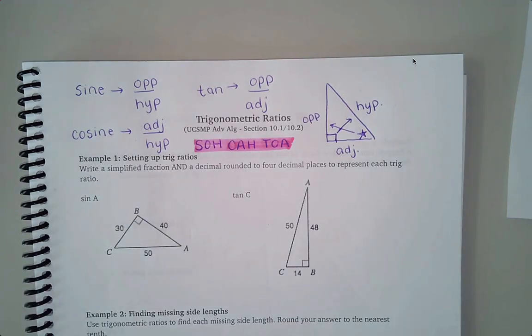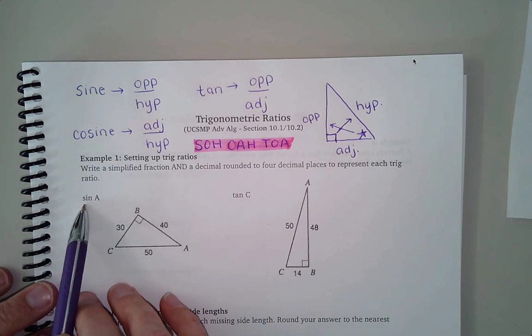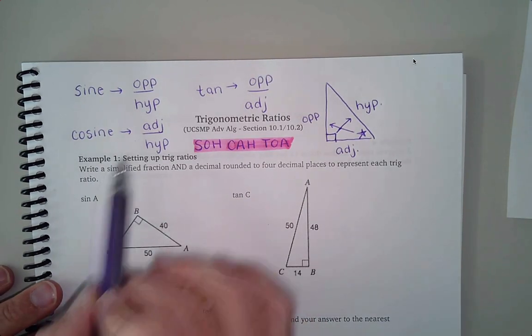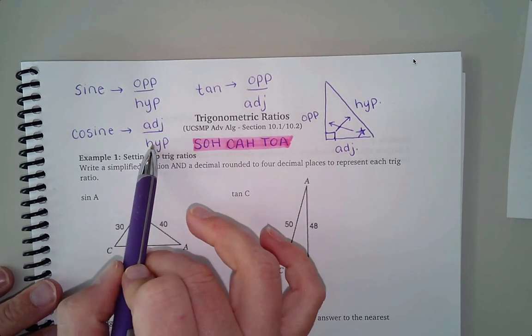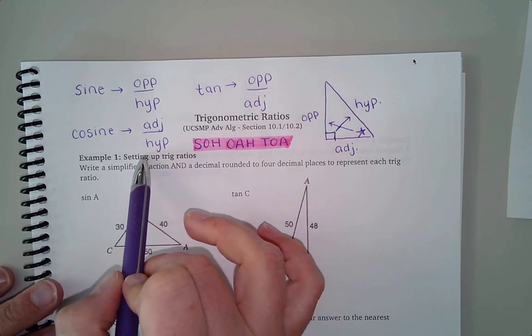First section is just getting into how do we identify these things and remember when I'm asking you for the sine or the cosine or the tangent, I'm really asking you for a fraction. I'm asking you it's what over what.